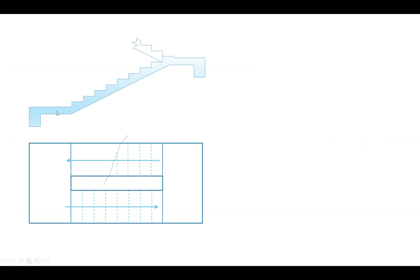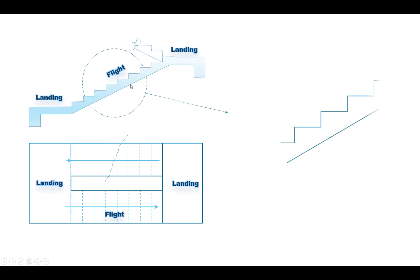All stairs consist of a horizontal part and an inclined or slope part. The slope part is called the flight and the horizontal part is called the landing. So we may have two landings and also two flights. Sometimes you have only one landing and one flight based on the type of stairs. This flight consists of different steps. The rise of the step is called the riser, the width of the step is called the tread, and the thickness of the stair is called the waist.